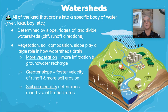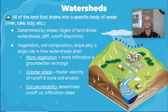Vegetation and soil composition play a role in how the watersheds drain. With more vegetation, there's more infiltration and groundwater recharge. If there's a greater slope, there's going to be less infiltration but faster velocity, more runoff, and more soil erosion.